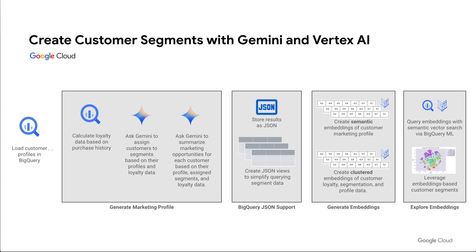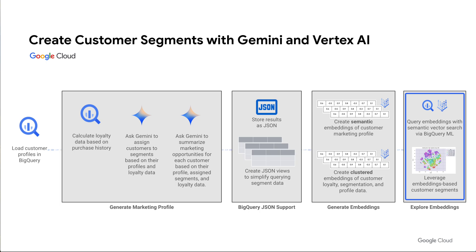Now that we have each of our customers assigned to segments in a flattened BigQuery view, we can retrieve a list of target customers for new marketing campaigns using familiar SQL syntax. But with Generative AI, we can go a step further by generating embeddings to enable semantic search and on-the-fly customer segmentation, leveraging Vertex AI embeddings and vector search in BigQuery.